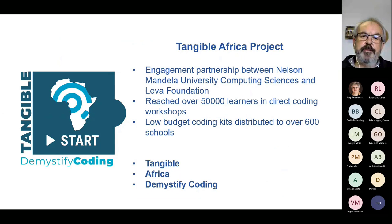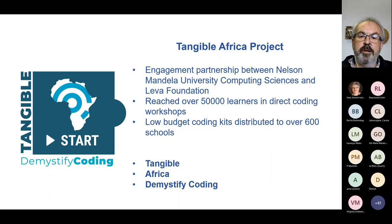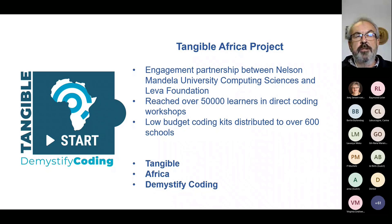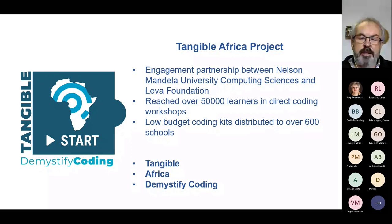The Tangible Africa project is an engagement partnership between our Department of Computing Sciences and the Lever Foundation, an NPO which I see as my rollout partner. We've now reached over 50,000 learners in direct workshops by our own facilitators. Our kits have been distributed to over 600 schools. Counting the schools and what they've done in their classrooms, I want to say we've probably reached over 100,000 learners since 2017. But counting has become a problem — it was easy when only we did workshops, but now it's become impossible.